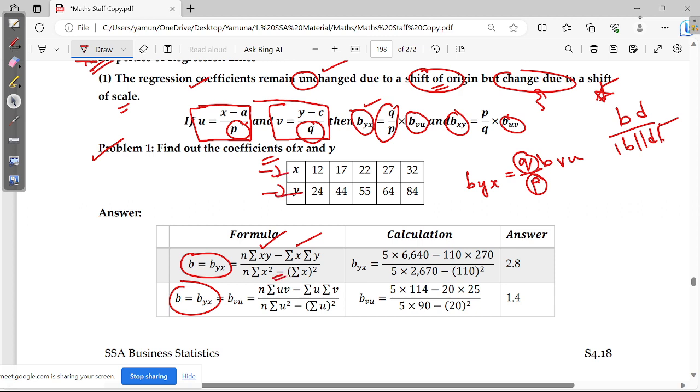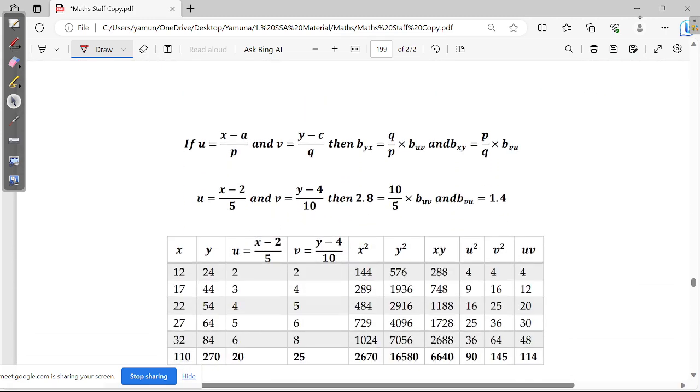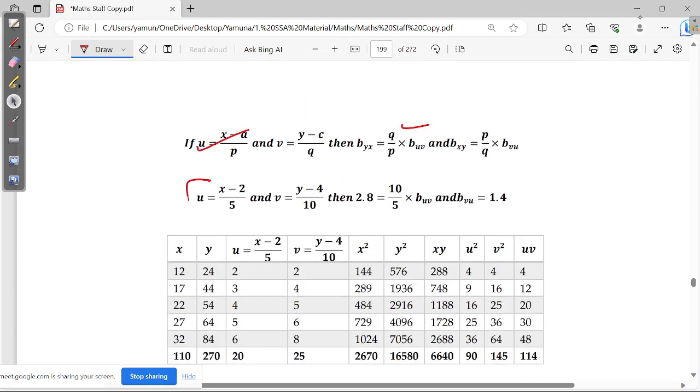If I substitute the values, the intention is to do this. 2.8 is my BYX value and BXY value, BUV value here is 1.4. U and V can shift. In case U is X minus 2 by 5 is shift. 5 is change of scale. V is Y minus 4 by 10 is shift of scale.